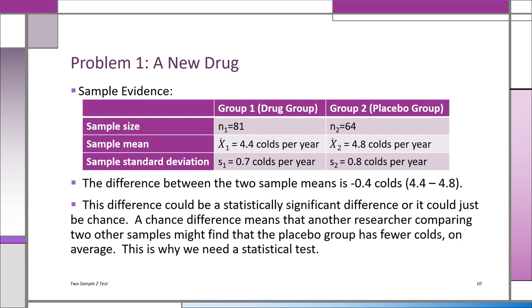Is the 0.4-cold difference real or just chance? Anytime you compare two groups there will likely be some difference — the big question in statistics is whether it's chance or a real difference. If you flip a coin 50 times and get 23 heads, then flip it again, you almost certainly won't get the same number — that's just chance. That's why we always have to test. The government won't let you use a new drug unless you've tested it for significance, to make sure it's different from taking no drug at all.